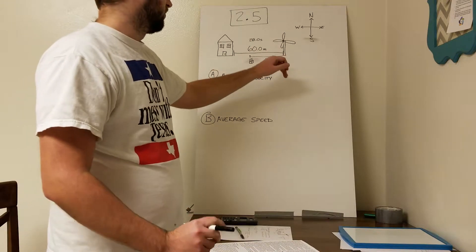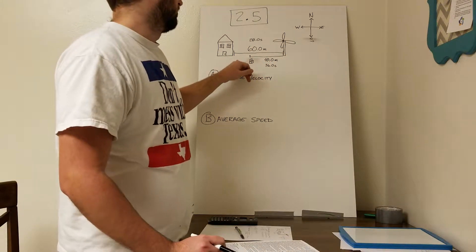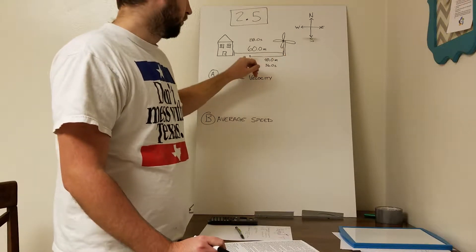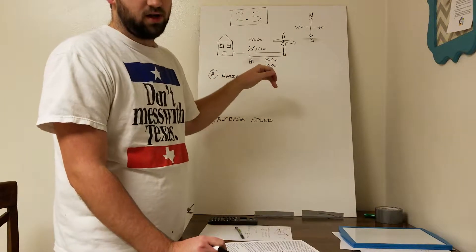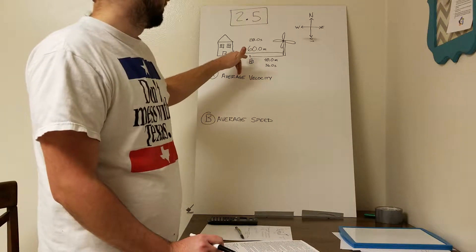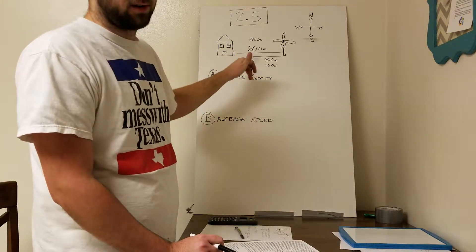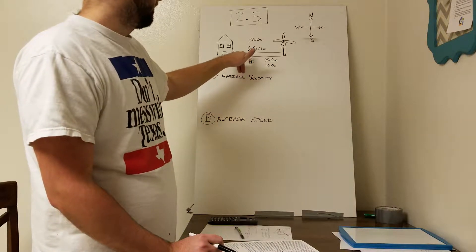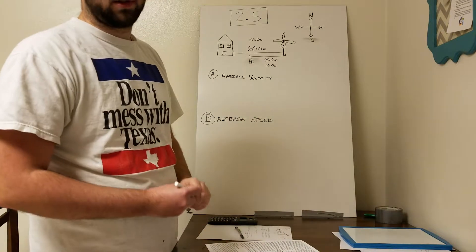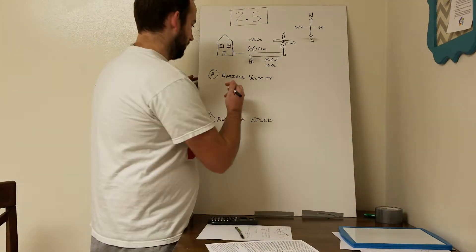As we look at this visual that we've made, we know that the person went 60 meters out but then came back 40 meters. With displacement, we only count where they ended and where they started, and so that amount from where they started to where they ended was only 20 meters. So that's our displacement.